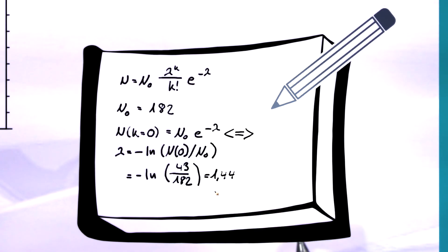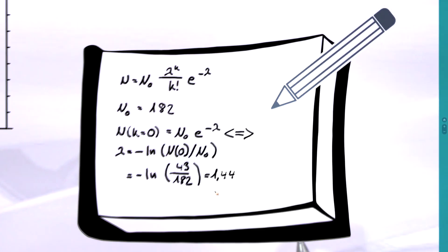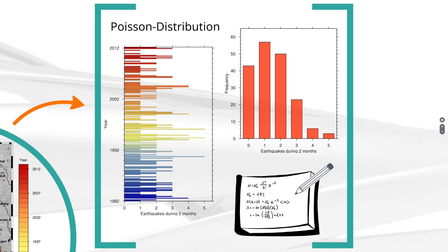With this, we can calculate the theoretical Poisson distribution according to the formula. This is what it looks like and is very close to the observed distribution of main shocks in the Upper Rheingraben.